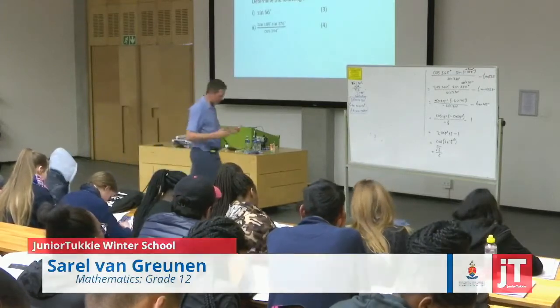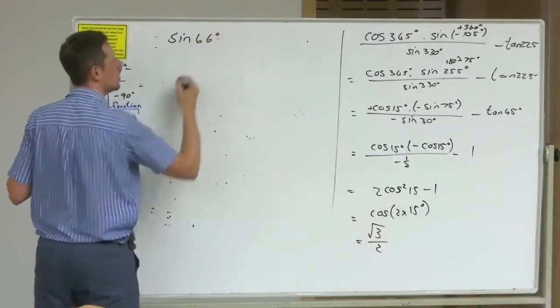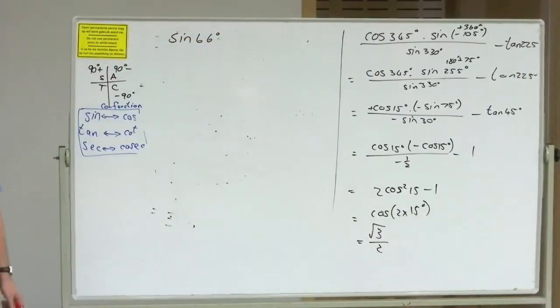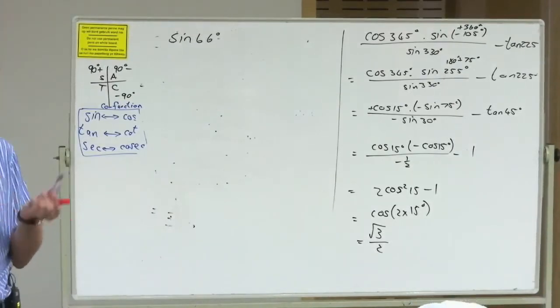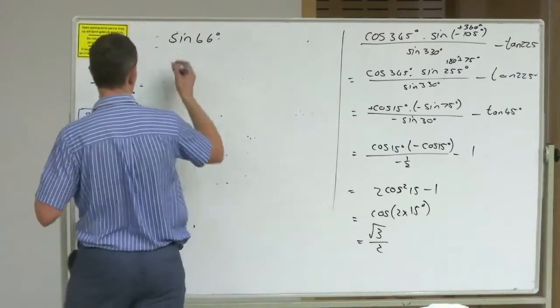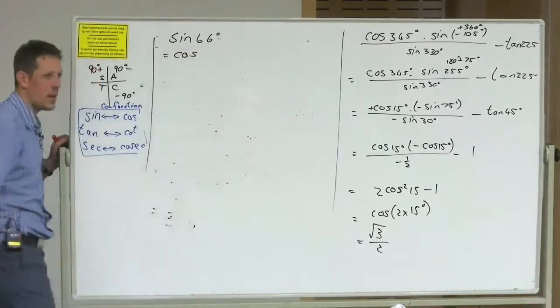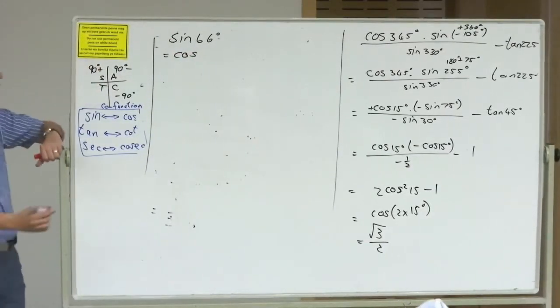And initially, it seems like no correlation between the two. So what I try to do is, okay, 66 is too big, so I try and see, can't I use co-functions? And in this case, the answer is yes, this is the same as cos of 24.